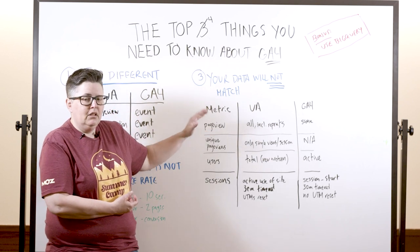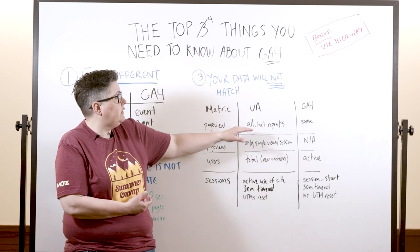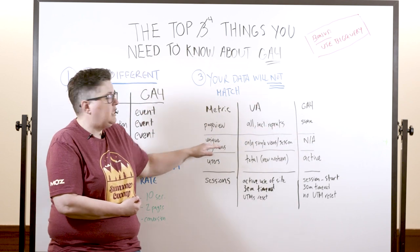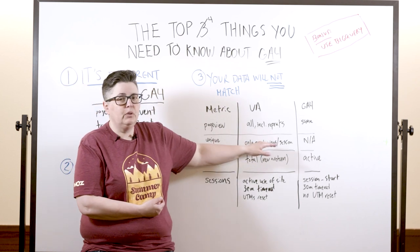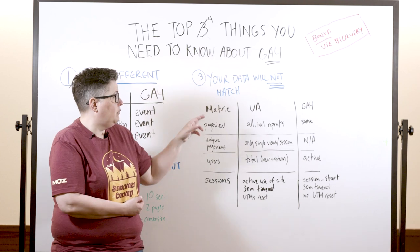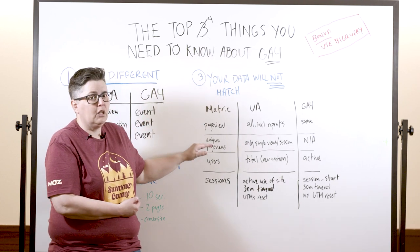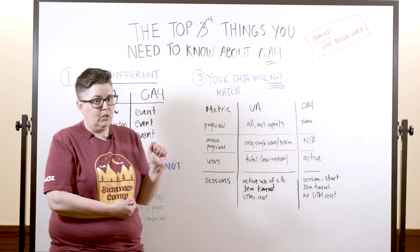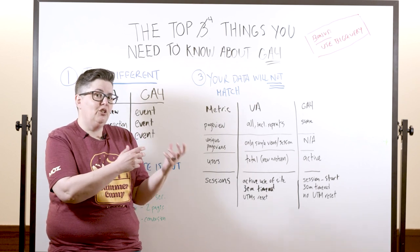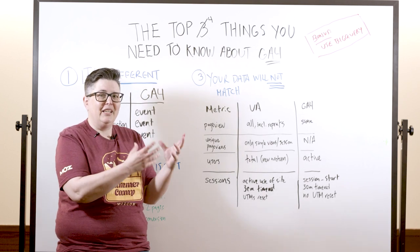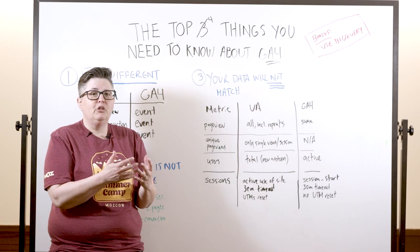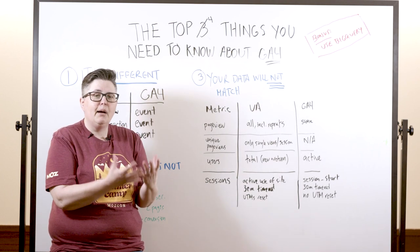First: the page view metric. In Universal Analytics, this was all page views including repeats — same in GA4, so far so good. Then we had unique page views in UA, which was only single views per session. So if I looked at the home page, went to a services page, then went back to the home page, I'd have two page views but one unique page view. That metric does not exist in GA4. If you were used to reporting on unique page views, it's gone. I recommend changing your reports now to get people comfortable with that transition.